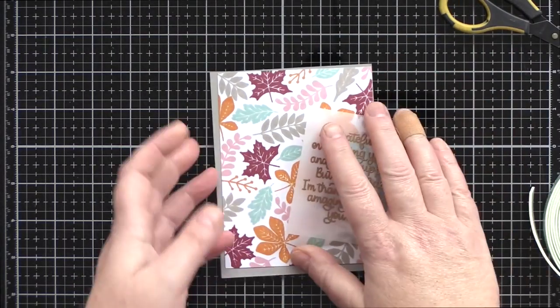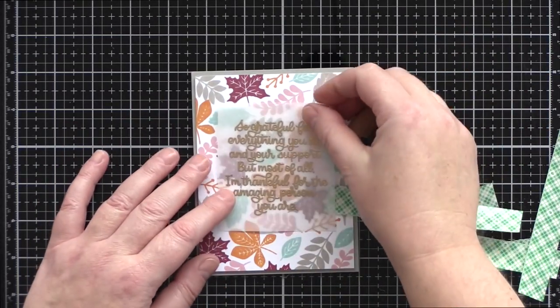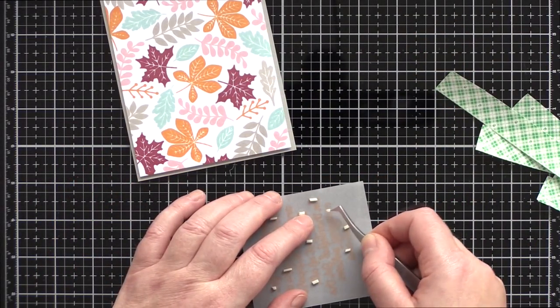I treated the vellum with a powder bag and then stamped the sentiment in clear embossing ink before sprinkling with antique gold embossing powder and heat setting.